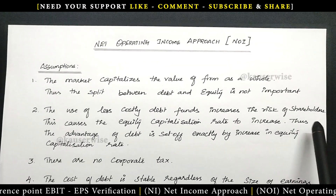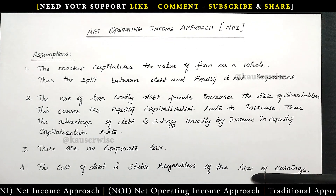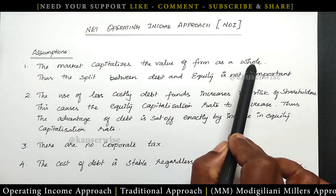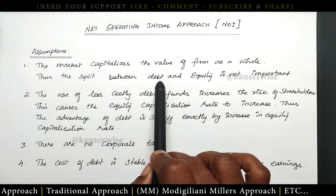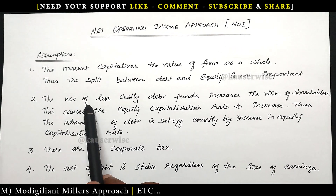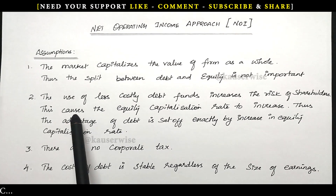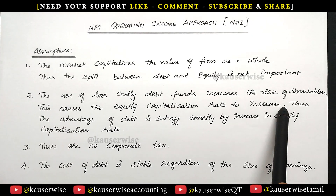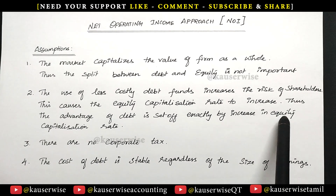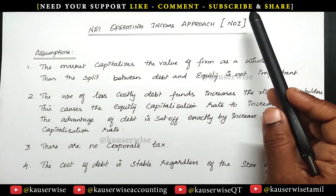Before we see the numerical problem on net operating income approach, let us try to understand the basic assumptions and formulas. The first assumption is the market capitalizes the value of the firm as a whole — that is, the split between debt and equity is not important according to this approach. The second one is the use of less costly debt funds increases the risk of shareholders, so this causes the equity capitalization rate to increase. Thus, the advantage of debt is set off exactly by the increasing equity capitalization rate. This is also one of the important assumptions under the net operating income approach.